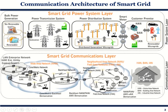When we talk about communication layers, it is divided into several parts. The communication at the consumer part is named as HAN — Home Area Network, or Building Area Network, or Industrial Area Network. Moving ahead, you have a Field Area Network or Neighborhood Area Network, which is NAN. Similarly, moving further towards the generation side, we have a Wide Area Network.